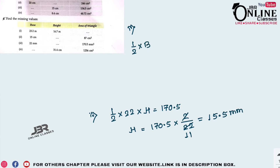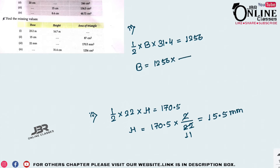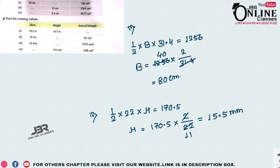Number 4: ½ × b × height = 1256, and height = 31.4. So base = 1256 × 2 ÷ 31.4. 1256 ÷ 31.4 = 40, then 40 × 2 = 80 cm as the base.